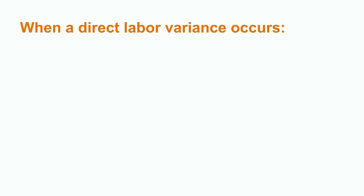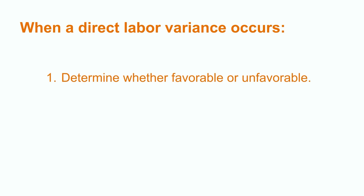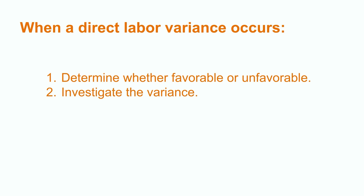Any time a variance is identified, it's important that the company determine whether it is favorable or unfavorable so that they can make a decision on how to proceed. Determining these variances between the budgeted values and the actual results is really only the first step. The next step, which can be even more important, is to spend time investigating the variances by breaking them down into components that will provide greater insight into the root cause. This can also involve additional discussion with department managers to understand what went wrong.